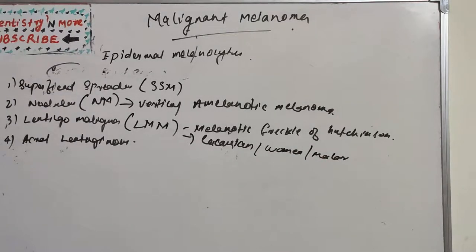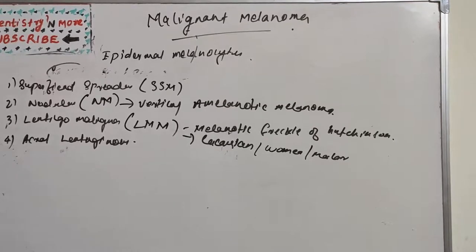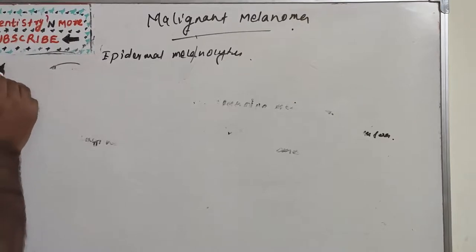Acral lentiginous melanoma develops on the palms and soles as well as on the toes and fingers. It is characterized by macular lentiginous pigmented areas around a nodule and is extremely aggressive, with rapid progression from the radial to vertical growth phase.